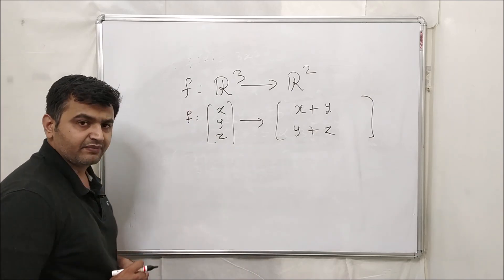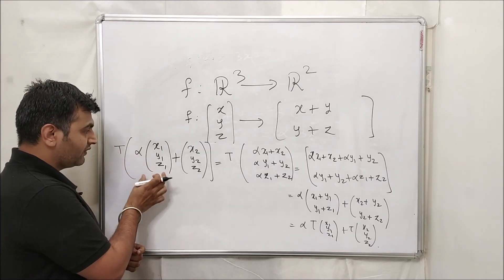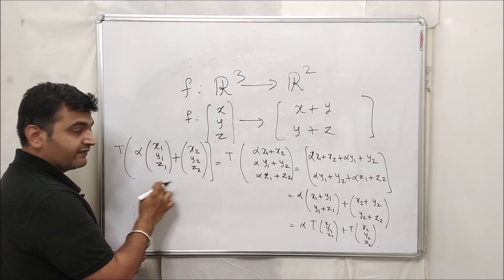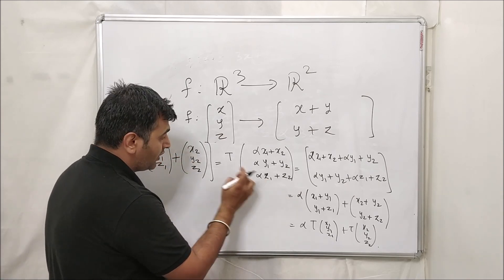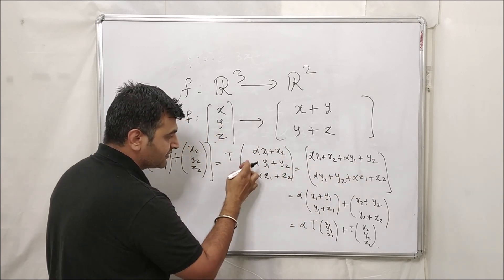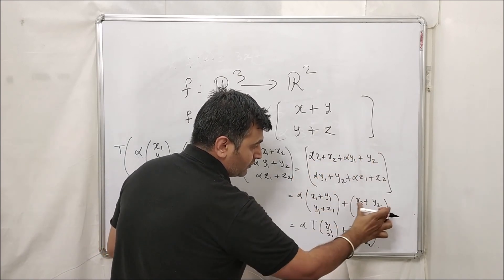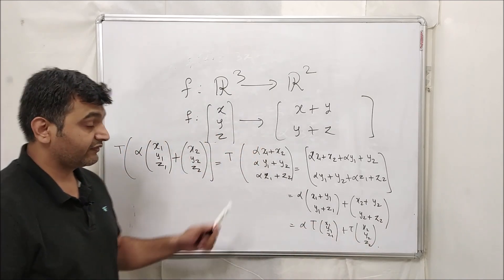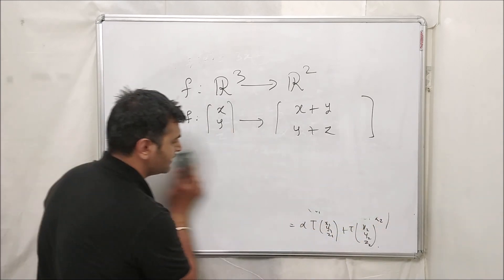Without π, verify at one shot: T(α(x₁,y₁,z₁)+(x₂,y₂,z₂)). Simplify inside to get (αx₁+x₂, αy₁+y₂, αz₁+z₂). The image adds first two components and last two components; factor out α to get α·T(first vector) + T(second vector). Therefore it is a linear transformation.